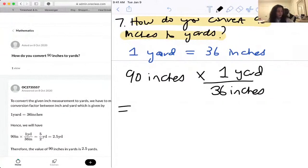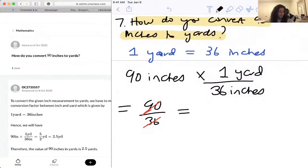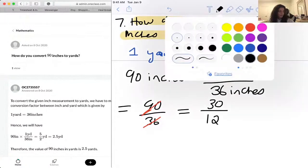This results in 90 over 36, which we can simplify. We don't even need a calculator at this point. Divide it by 3, let's say, that gives us 30 over 12. We can divide this again by 3.